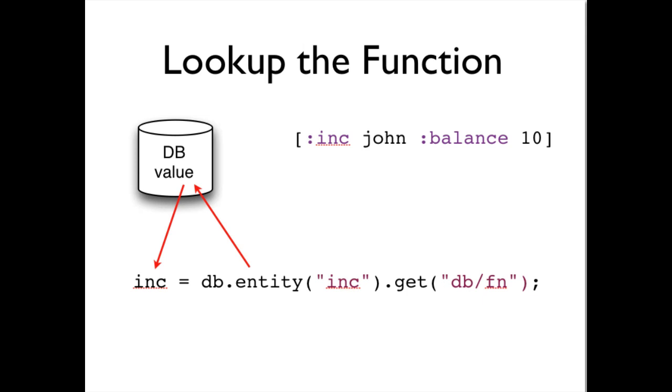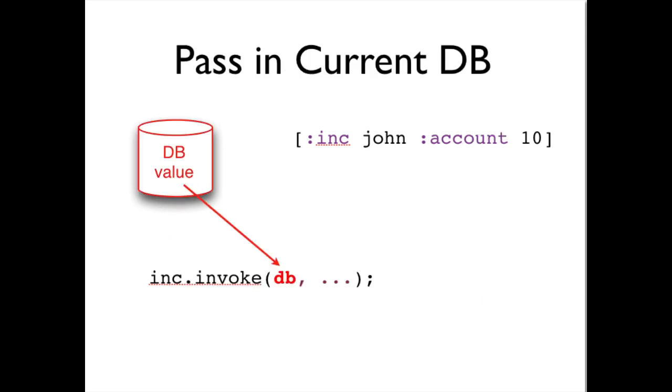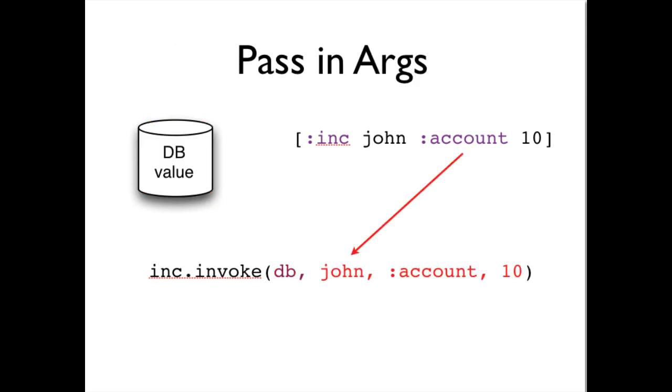When inc john balance 10 is to be expanded, the transactor will look up the inc entity in the database and get its dbfun attribute. It will then invoke the database function, passing in the value of the database as the first argument. Using query and entity, you can then access any information from the database you need. In this case, we'll need to know john's current account balance. In addition, the invoke is passed whatever args came in through data with the inc call.